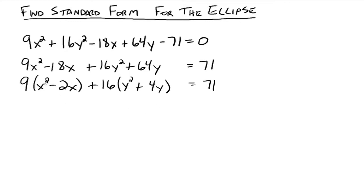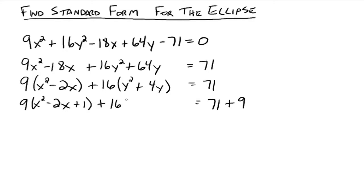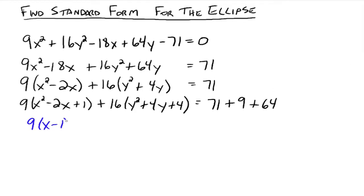Inside each parentheses, complete the square. For the x group: half of 2 is 1, 1 squared is 1 — add 1 inside, but we really added 9 to the left side, so add 9 to the right. For the y group: half of 4 is 2, 2 squared is 4 — add 4 inside, but we really added 64 to the left side, so add 64 to the right. This gives us 9 times x minus 1 squared plus 16 times y plus 2 squared equals 144.